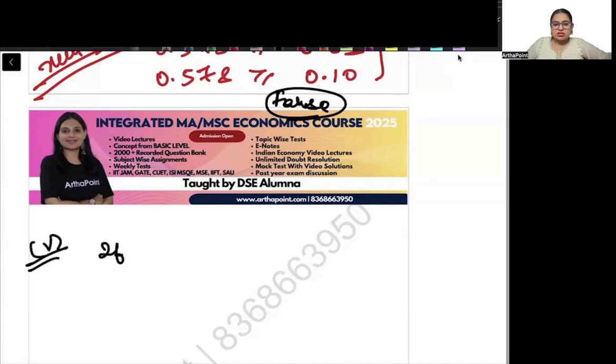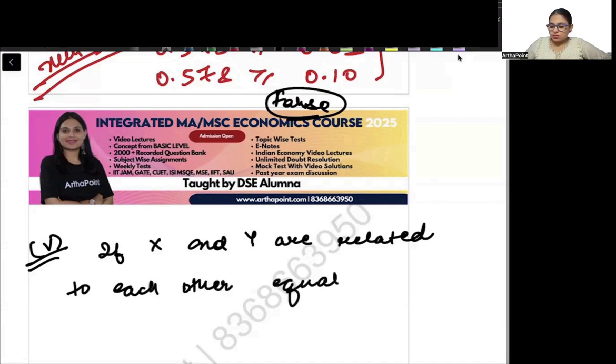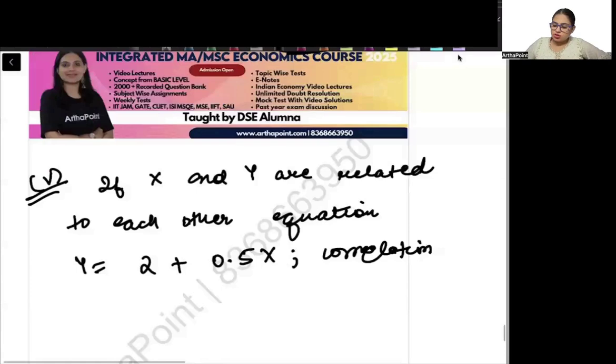Let's go to the fifth statement. It says if x and y are related to each other by the equation y equals 2 plus 0.5x, correlation coefficient is 0.5.